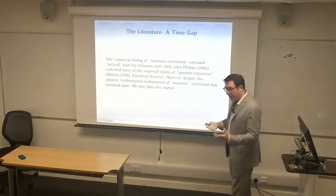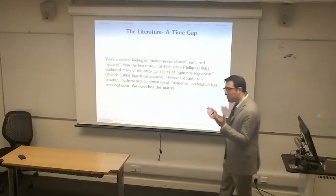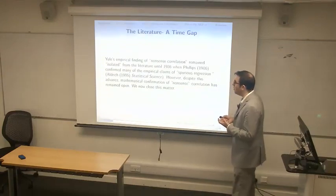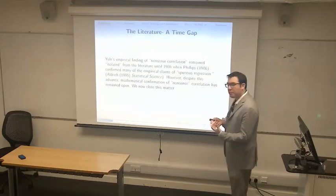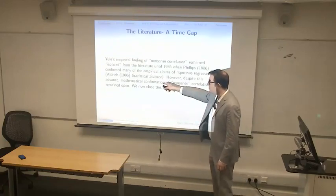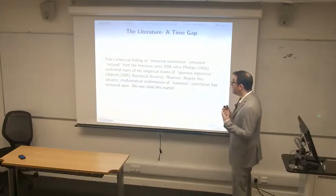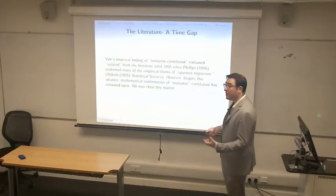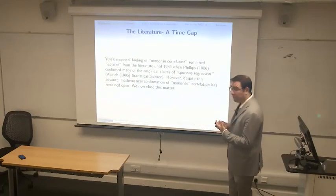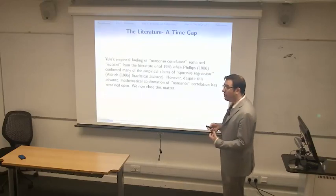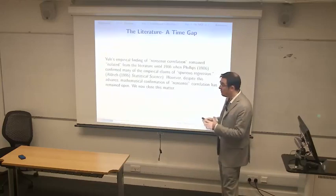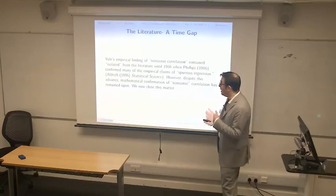In terms of understanding Yule's nonsense correlation, although it was empirically well understood after Yule, it did remain isolated from the literature according to the statistical science paper from Aldrich. Key victories were made by P.C.B. Phillips in 1986 and his 1998 Econometrica paper, but an exact calculation of the moments of this distribution remained open — and that will be the point of this talk.